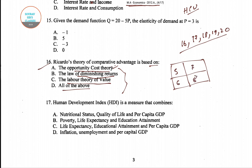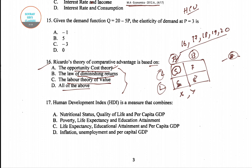Consider two countries — Country A and Country B — with labor needed to produce the same quantity of commodities X and Y. Country A needs less labor for both X and Y, giving it absolute advantage. But Ricardian theory says trade can still occur because the opportunity costs differ. Dividing the labor values (5/7 and 6/8) shows differing opportunity costs, so each country will import the good with higher opportunity cost. Therefore, Ricardian comparative advantage is based on the opportunity cost theory — option A is correct.